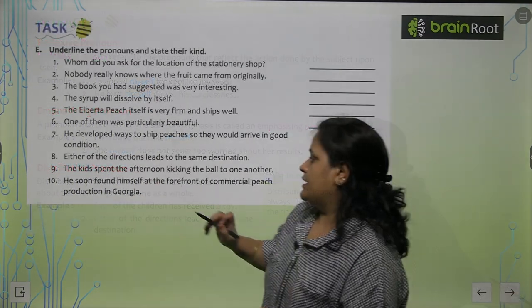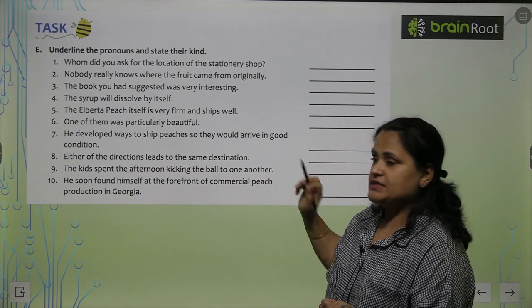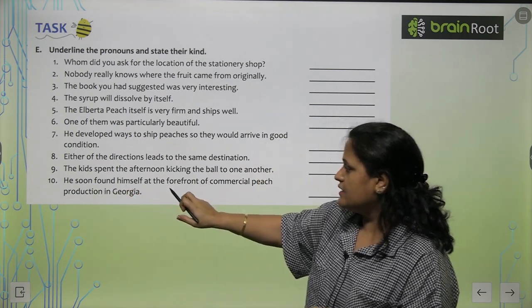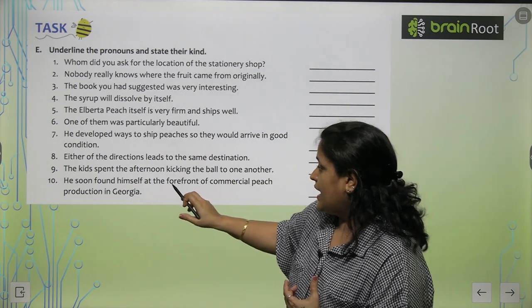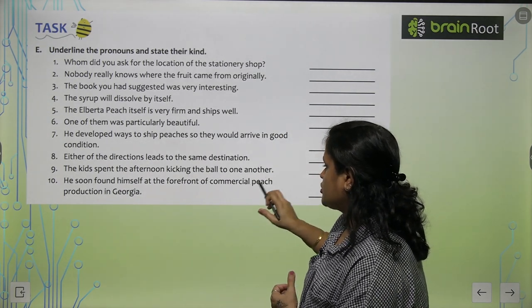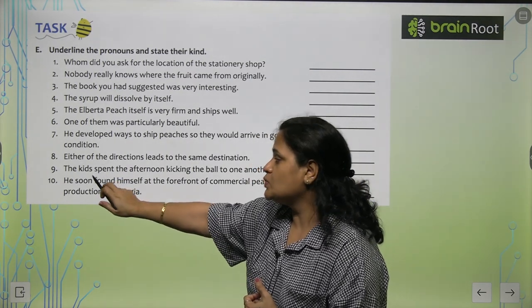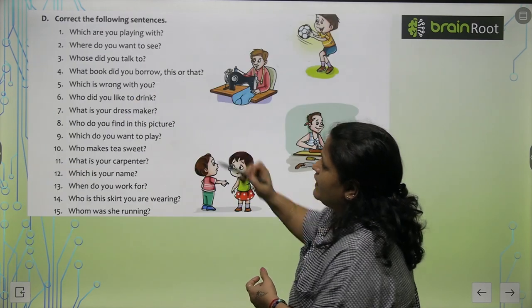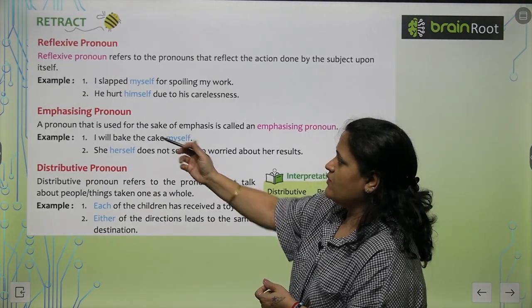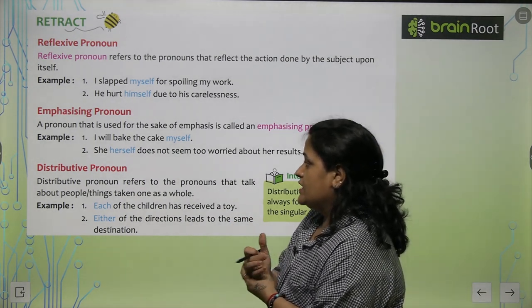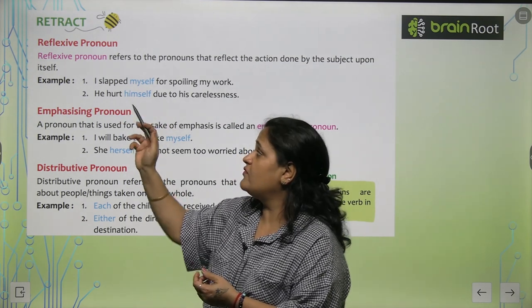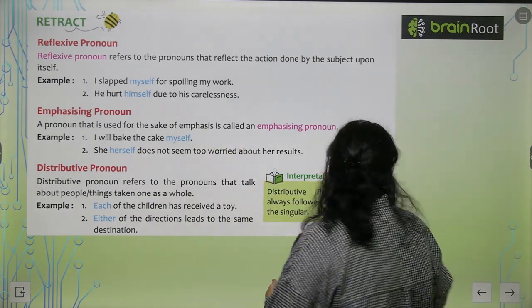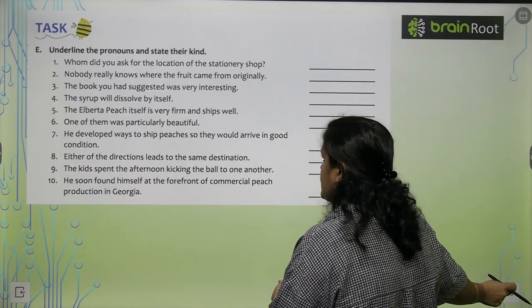Just to clarify — distributive pronoun, like 'either of the directions leads to the same destination.' This is also distributive. 'He soon found himself at the forefront of commercial peach production in Georgia.' — He soon found himself. I hope you are understanding the exercises.